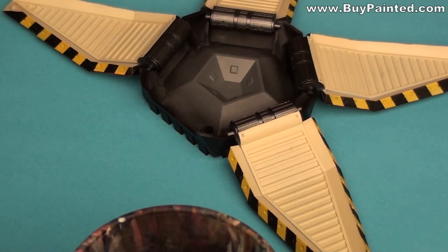I started final assembly of the model. After assembly of the base, I added the paint chips using a sponge. I used German Camo Black Brown to do this.